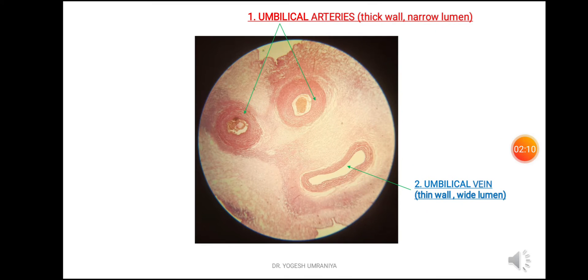This is the photomicrograph of the umbilical cord. In this field of the microscope you can see the two umbilical arteries, and within them you can also see the blood. The arteries have thick walls and the lumen is somewhat narrower as compared to the lumen of the vein. Number 2 is the umbilical vein, which has a thin wall and a wider lumen as compared to the umbilical arteries.